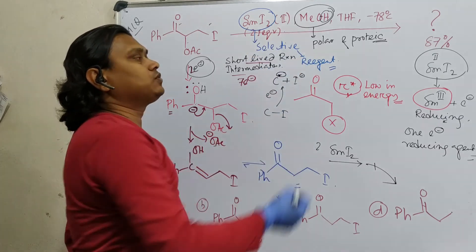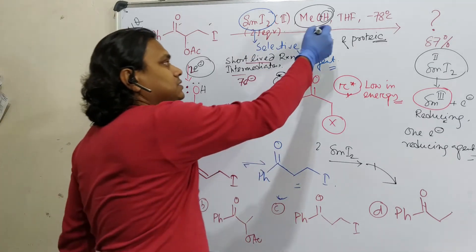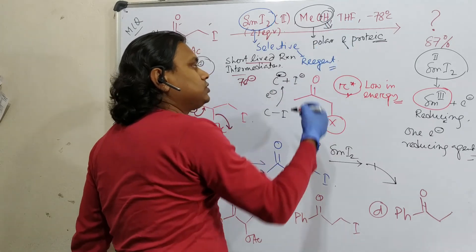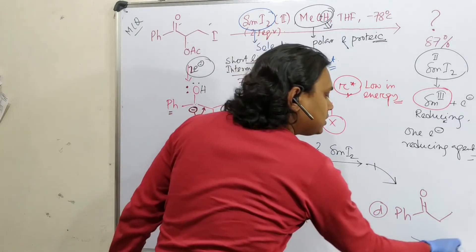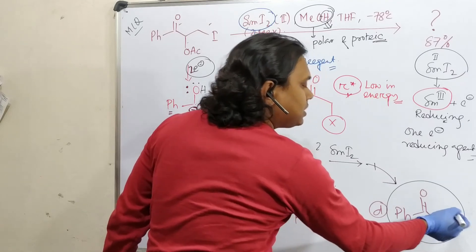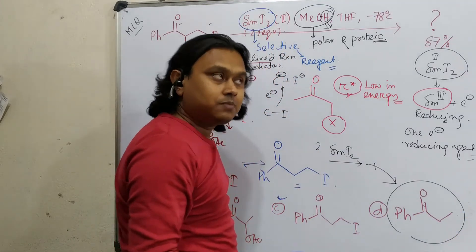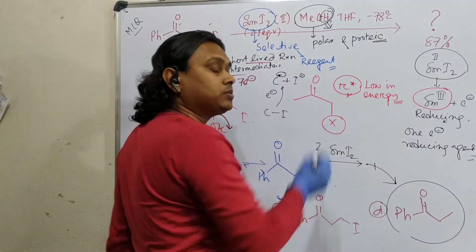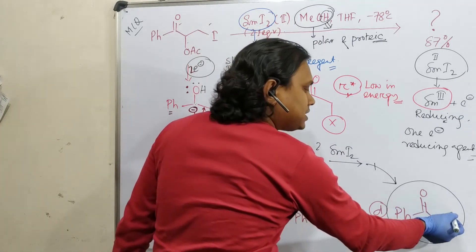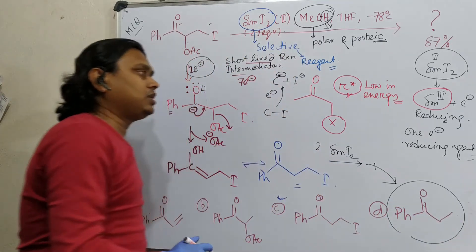And when you quench, means after workup, or you can say there is methanol, polar protic solvent, which will give proton. Ultimately, it will convert into this. Because the carbanion is far more stronger base compared to the methoxide produced from methanol. Because it is sp3 hybridized carbon. So this is the overall discussion.